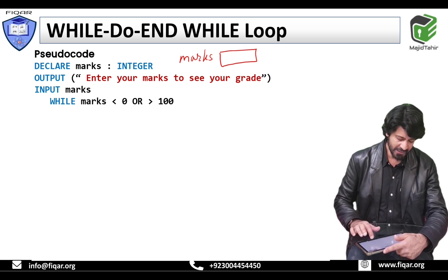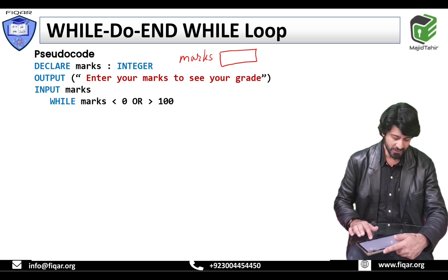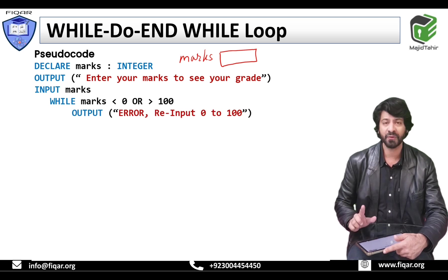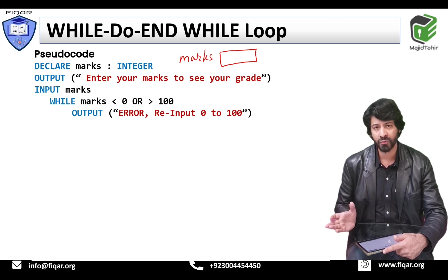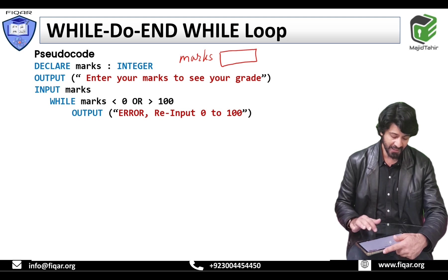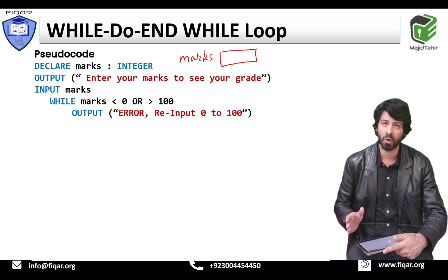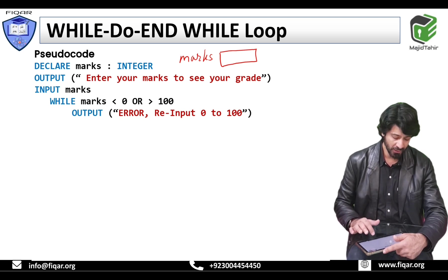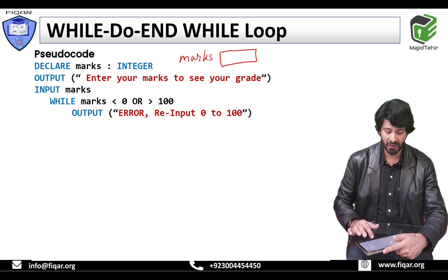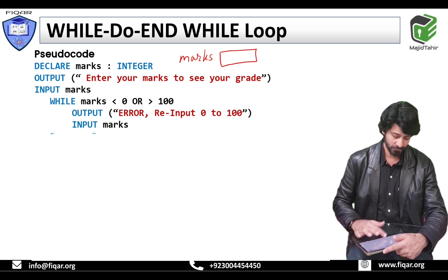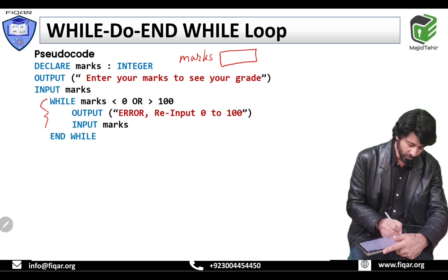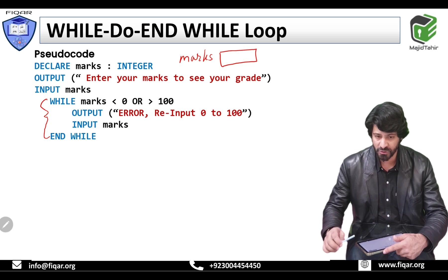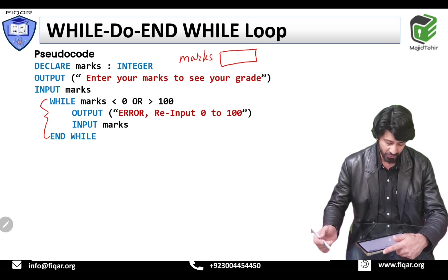Now there is a loop. It says: while marks are less than 0 or marks are greater than 100. If the condition is true — if the user inputs something which is more than 100 or less than 0 — it will display an error: re-input 0 to 100, and input marks again. End while. This loop will only work if the user inputs something above 100 or less than 0.